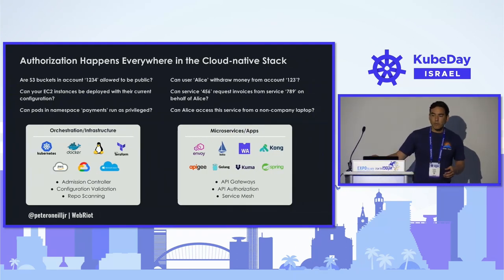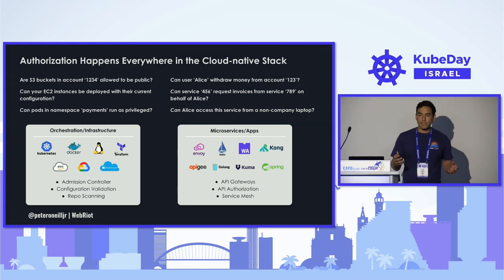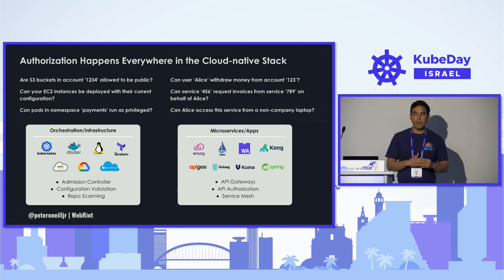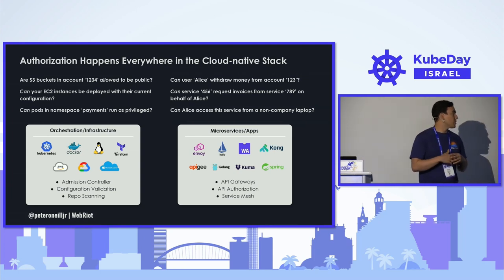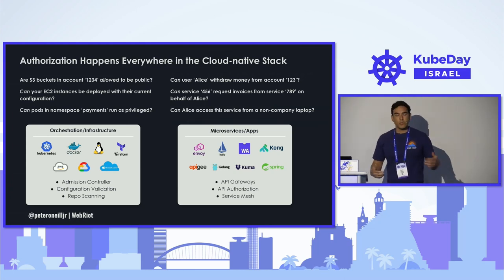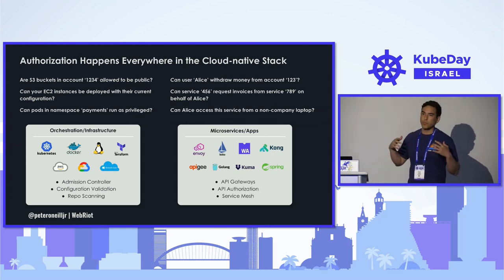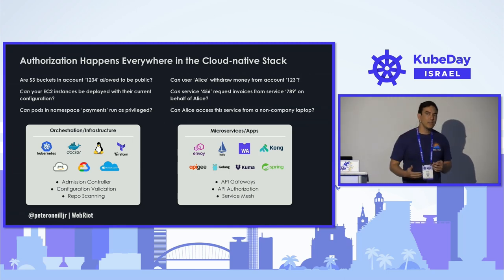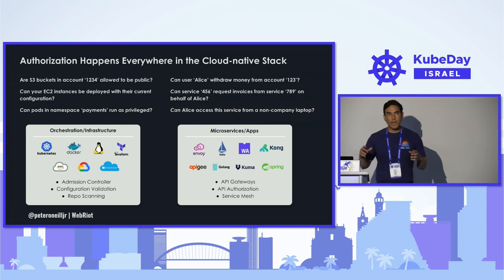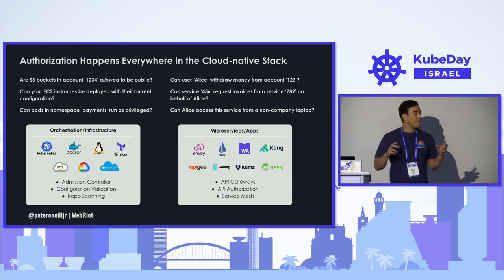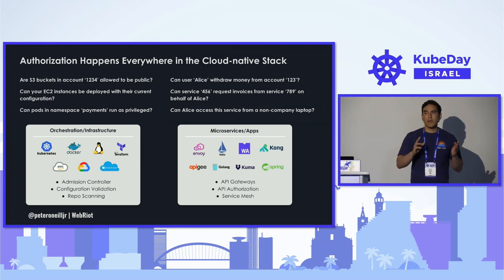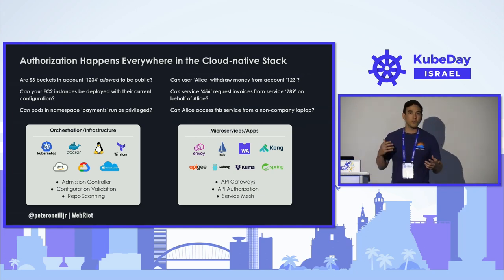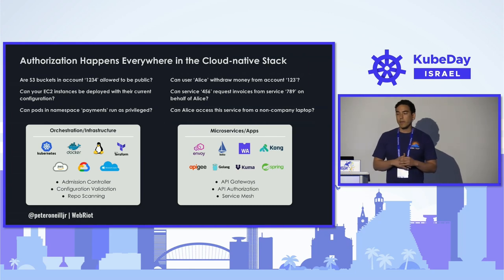When we think about all the different places that these interactions are happening, you can have things at the infrastructure layer — directly on Kubernetes or Docker. Inside Kubernetes, you have your admission controller. This is when Kubernetes is actually going to create resources — we are admitting those resources into Kubernetes. We need to have that modularity to say: I want specific users, specific service accounts, or specific entities to be able to create some type of resource in this cluster. You want to be able to control what that looks like.